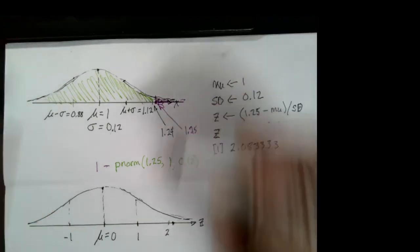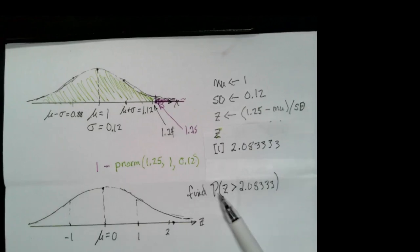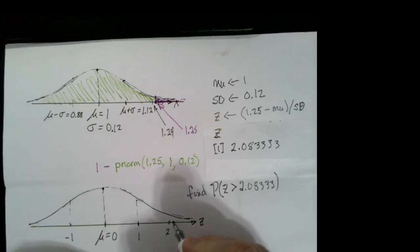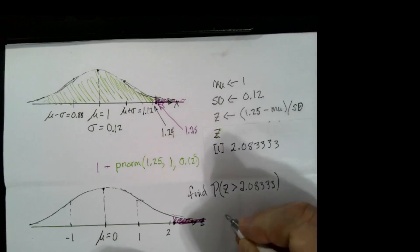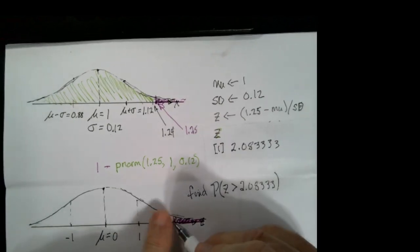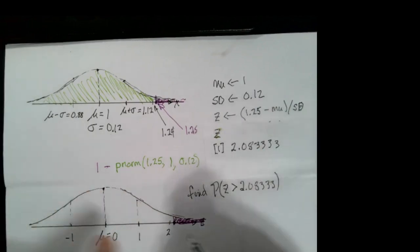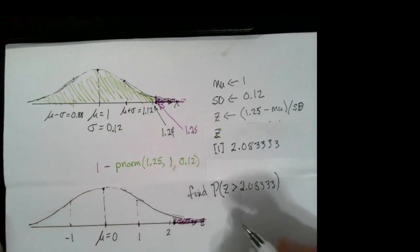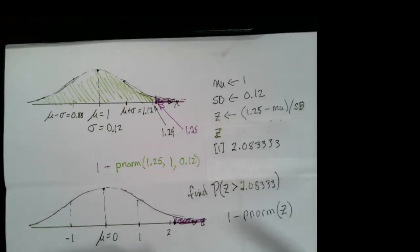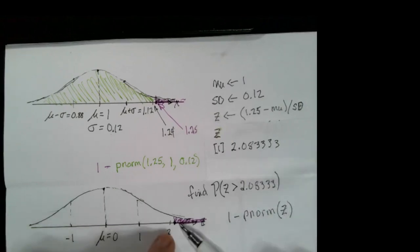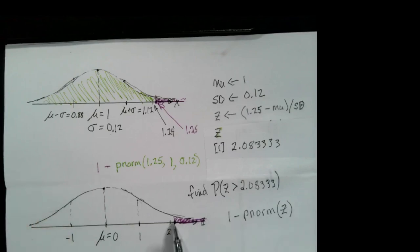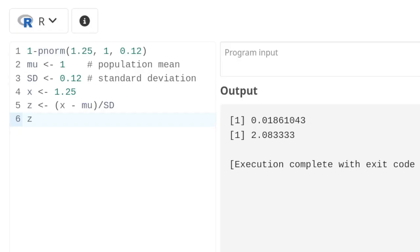Notice how similar these two graphs look. We've reduced the problem to finding the probability that Z is greater than 2.0833. We're interested in that area to the right. Continuing our script: pnorm(Z) gives the area to the left, which is the wrong amount. We need the area to the right, so we compute 1 minus pnorm(Z). That gives us the area above our particular Z value, using the standard normal curve.